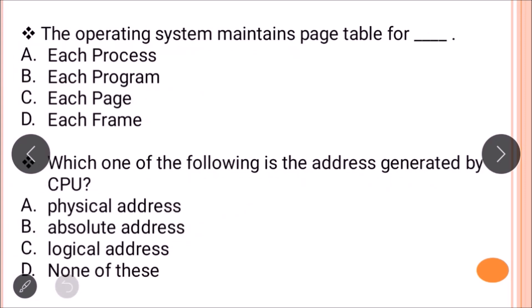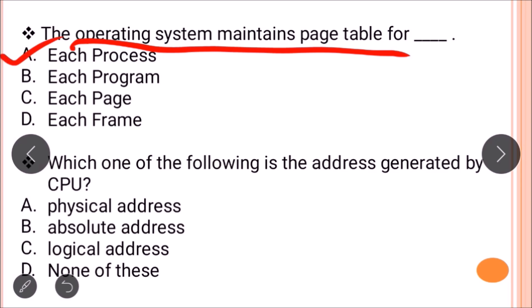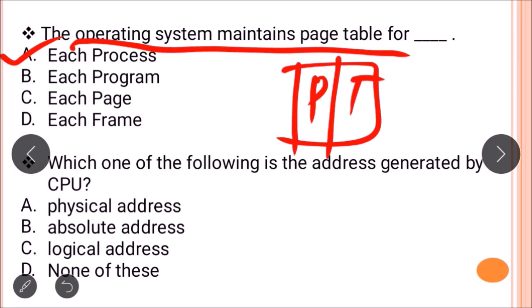The next question is: the operating system maintains the page table for — each process, each program, each page, or each frame? The correct answer is option A: for each process. When a process enters the system, it is divided into many pages. To track which page is stored in which frame in main memory, a page table is created. The operating system maintains one page table for each process.